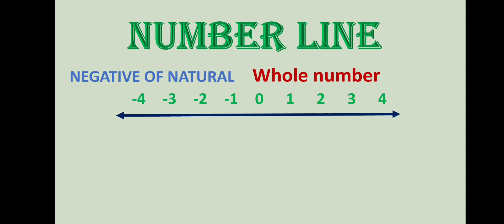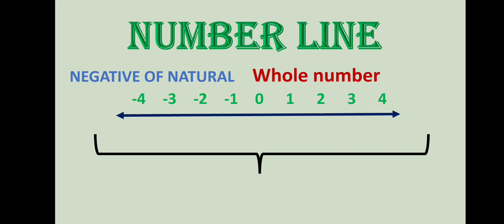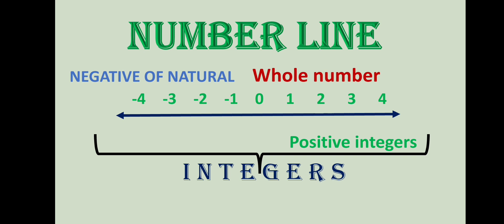Before zero, meaning less than zero, we use negative numbers: negative one, negative two, negative three. All these numbers are the negatives of natural numbers. When we take all these numbers together, they are integers. All whole numbers are integers, and the negatives of natural numbers are also integers. The natural numbers are positive integers, and everything to the left of zero are negative integers.